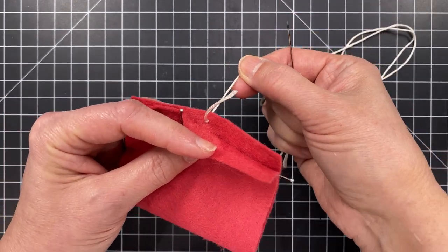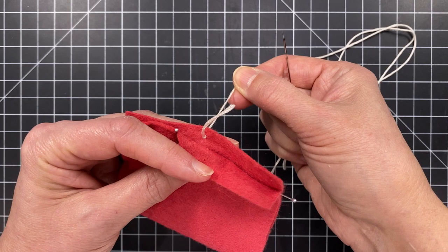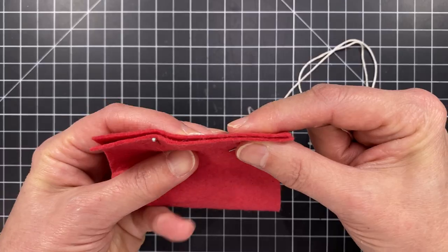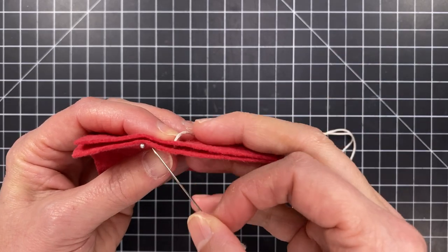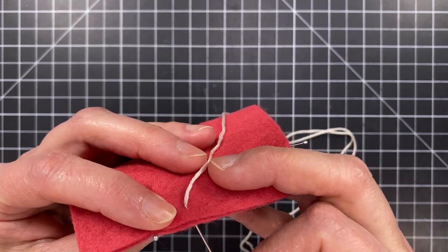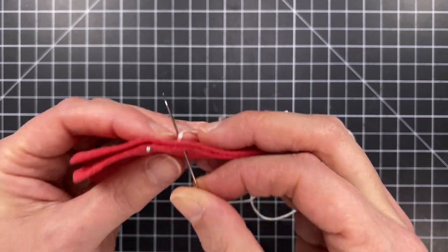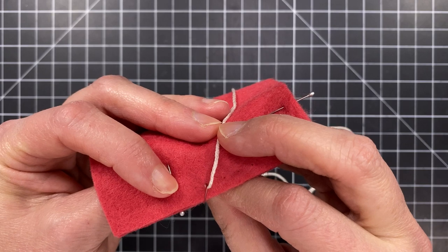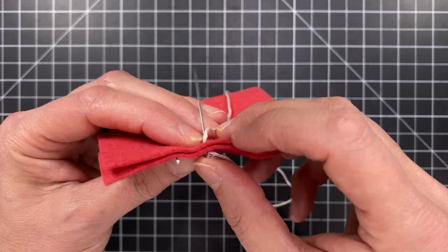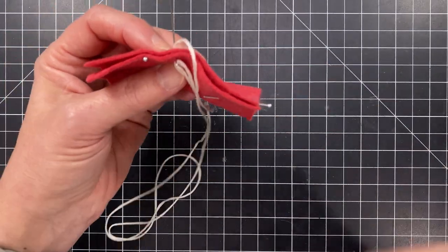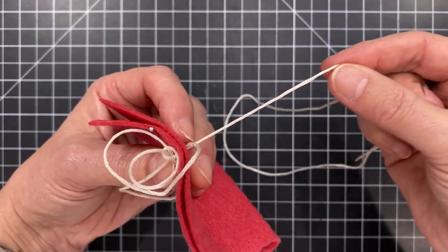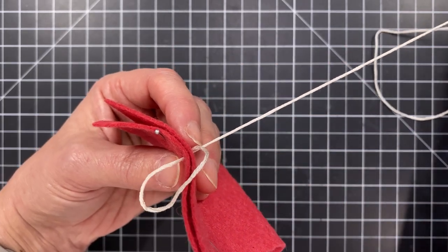I've got my knot and I went through the second layer of felt in between the two layers so that I could hide the tail end of my knot in between. That way nobody will ever see that. And then I'm going to come back up over the top and come back through that exact same hole. And this is going to be my anchor stitch that starts the whole thing.